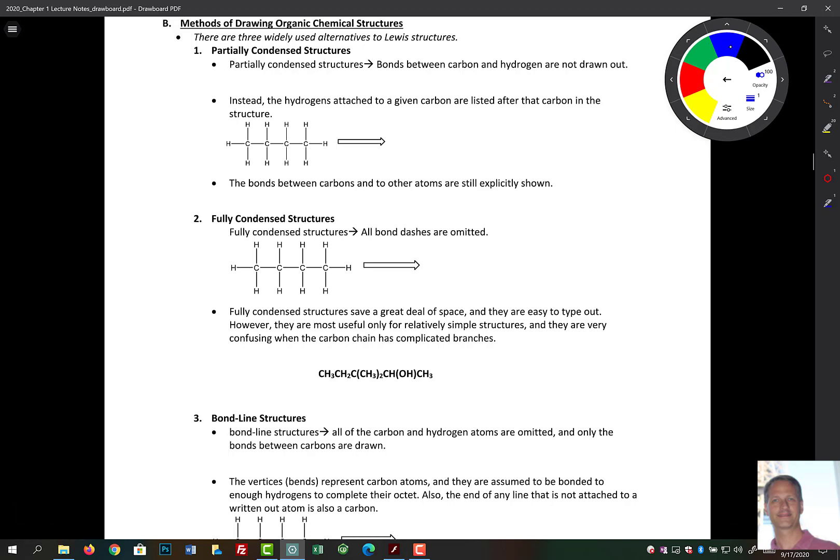The first one is called a partially condensed structure. In here, partially condensed structures bonds between the carbons and the hydrogens are not drawn out. So we're not going to draw out these H's here. We're going to omit those bonds. So CH3, that's what this guy is here, that's going to be connected to a CH2, another CH2, and here's the third group, that third group is a CH3. The bonds between carbons and bonds to other atoms are still explicitly shown.